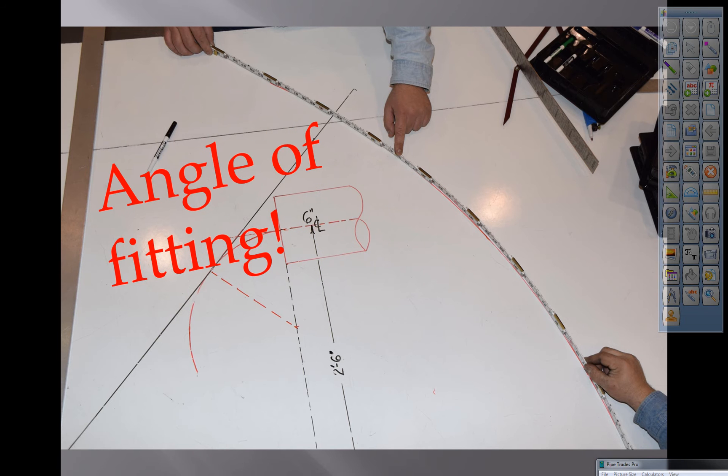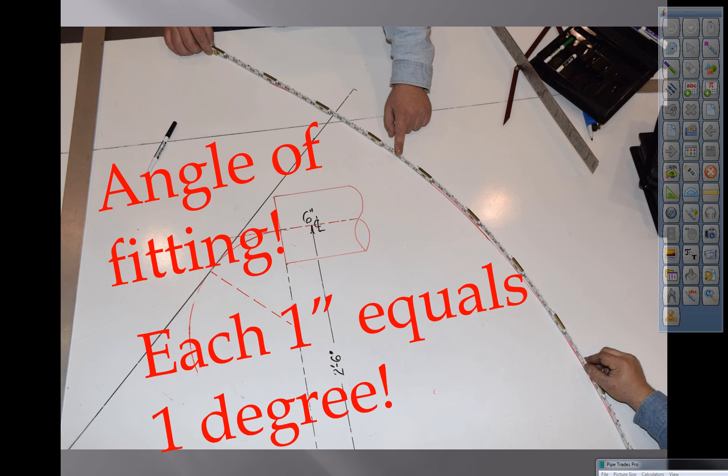And here's your angle of fitting. Keep in mind, each one inch equals one degree on that arc. You've taken your rule and turned it into a giant protractor or compass or angle finder. So each one inch equals one degree on that ruler.